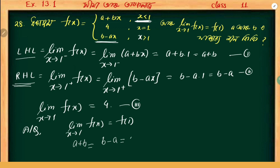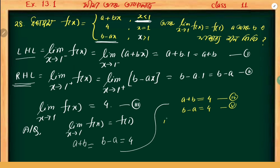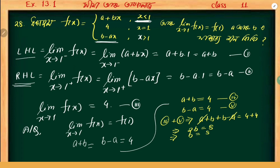From the continuity condition, f(1) is given, so a plus b equals 4 and b minus a equals 4. Adding these two equations: a plus b plus b minus a equals 4 plus 4, so a cancels out and we get 2b equals 8.